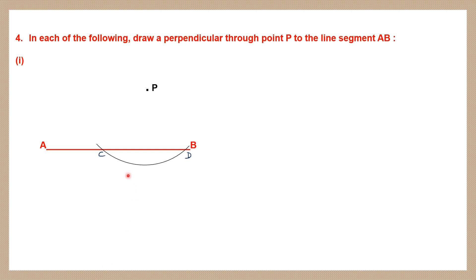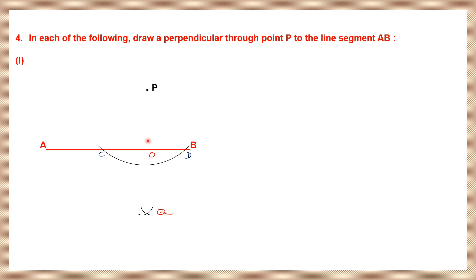Again take your compass and take a radius which is more than half the distance between C and D. Place it at C and draw an arc straight above, then place it at D and cut the arc. So we have two arcs — the point of intersection of both arcs, let's name it Q. Now join P and Q. They cut the line segment AB at a point and that point is O.